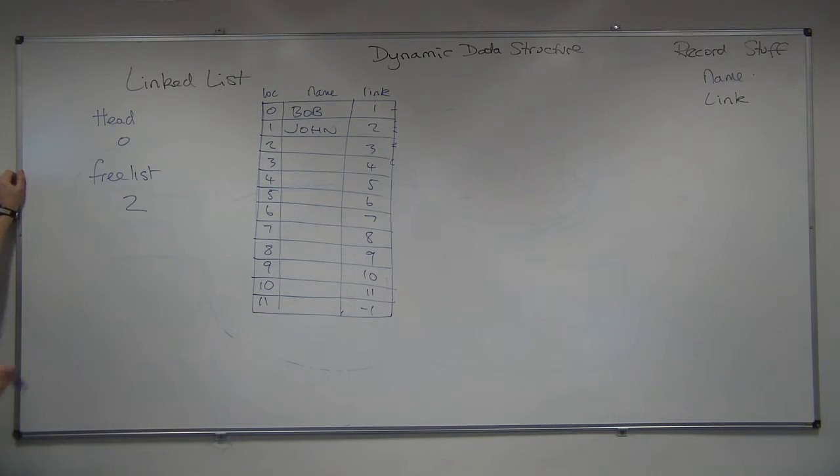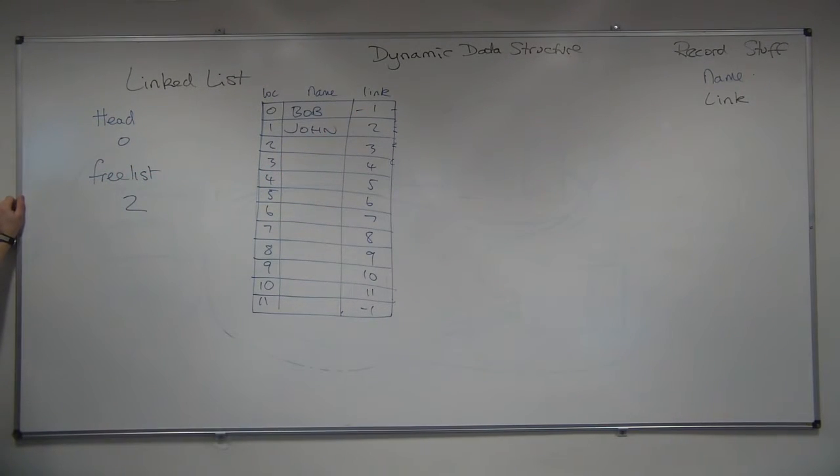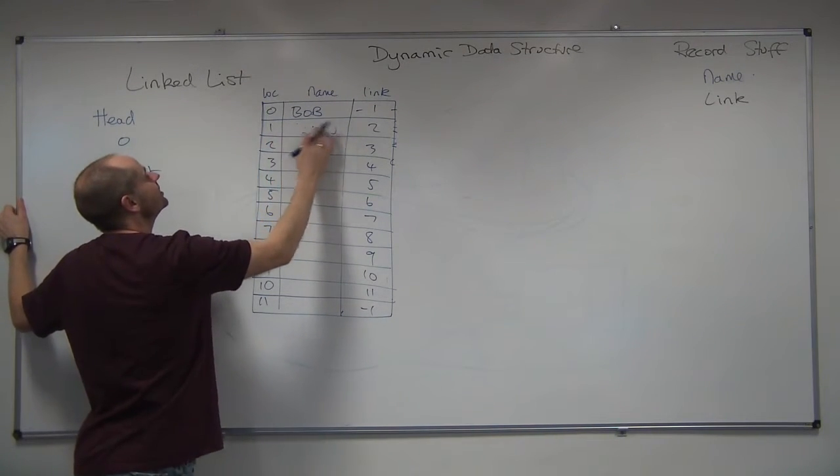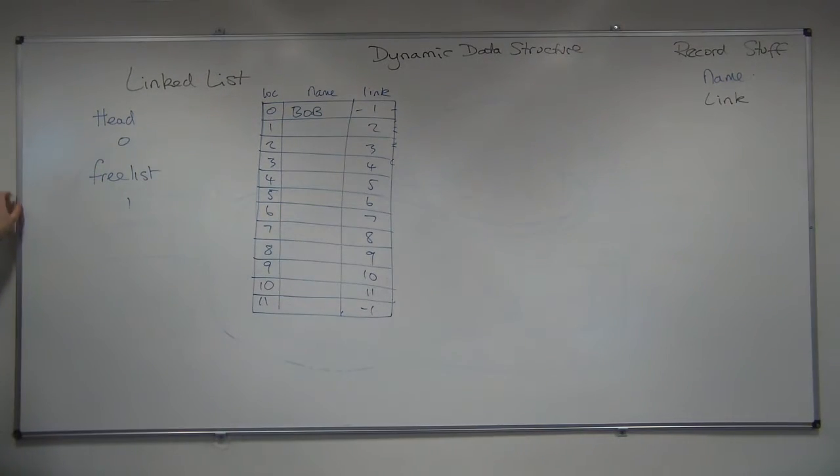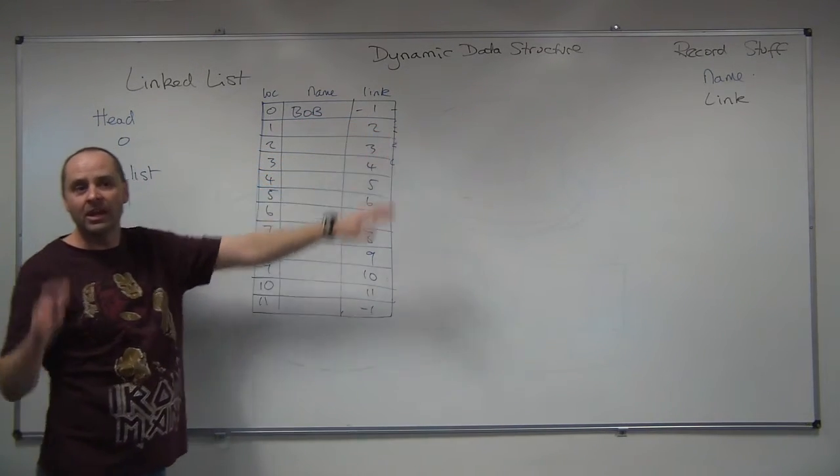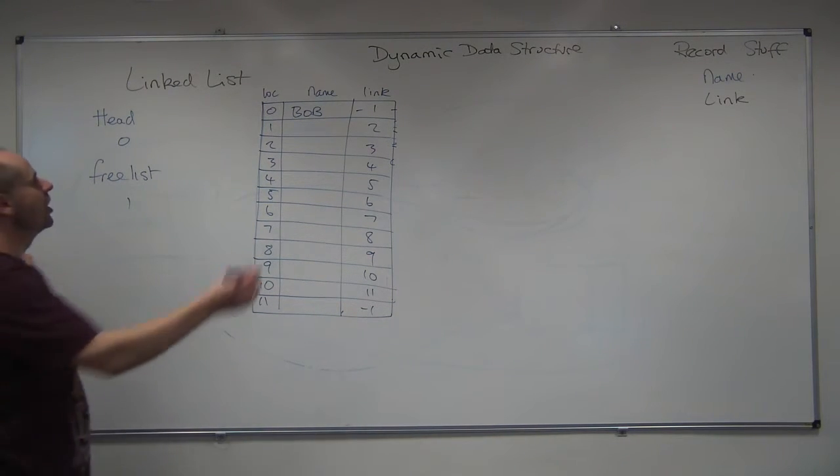I've put Bob in. But what have I put as the link for Bob? 1. That's not right. It should have been minus 1 when I first did it. If I go back, John never existed. It's like time travel. So, I've got that as my list. There is nothing following Bob. So the link from Bob is minus 1.